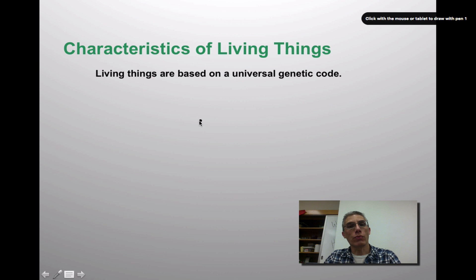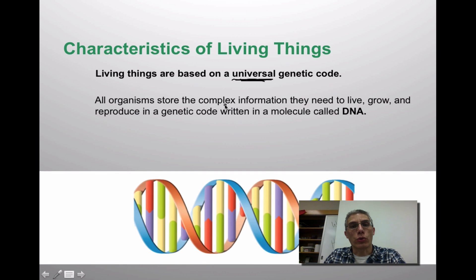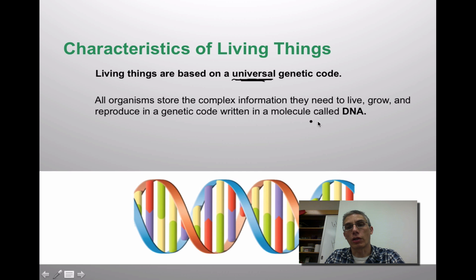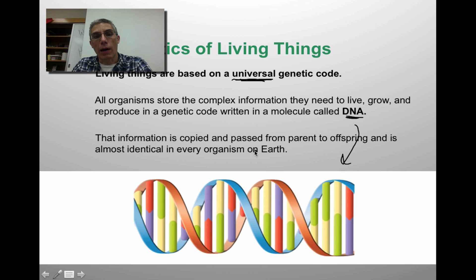The second characteristic is that living things are based on a universal genetic code. The key word here is universal — every single thing on this planet that has been identified as living is going to have this code. All organisms store the complex information they need to live, grow, and reproduce in this code. The special molecule we talk about when we discuss this genetic code is called DNA. You can see a good example of that double helix structure here. That information is copied and passed from parent to offspring, and it's almost identical in every single organism on this planet.